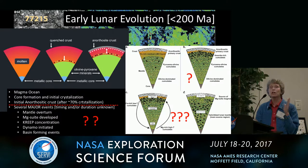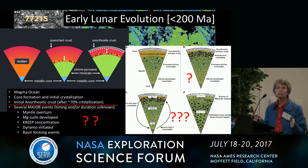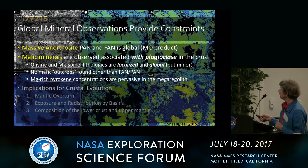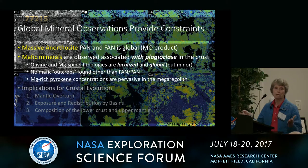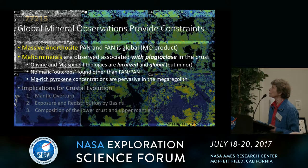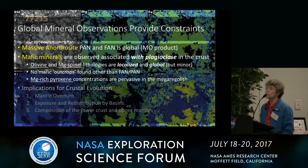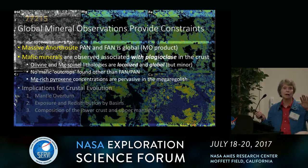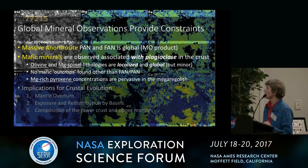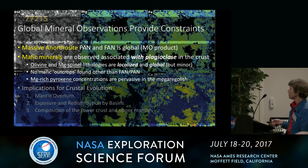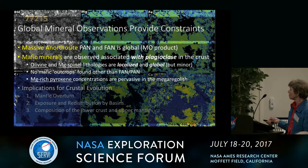Why am I saying all this? Because I want to show that we can put constraints on this by looking at the composition in a global context. We can't answer all the questions, but we can certainly put constraints. I'm going to talk about some of the compositional aspects we see at a global scale: the anorthosites and the PAN and FAN, which are global, and then the distribution of the mafic minerals associated with the highland crust — olivine, magnesium spinel, and magnesium-rich pyroxenes — and their distribution across the surface.